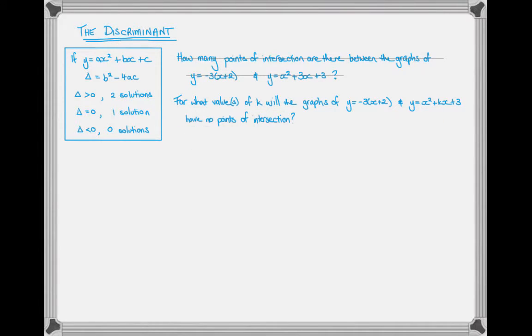You've been told here, for what values of k will these two equations, or these two graphs, have no points of intersection? That no points of intersection, you need to directly link that to this piece of knowledge here.